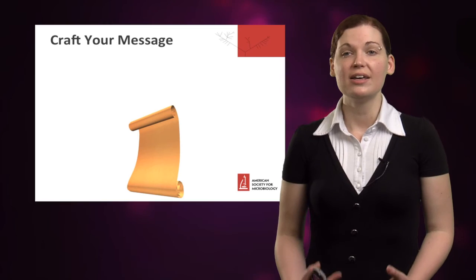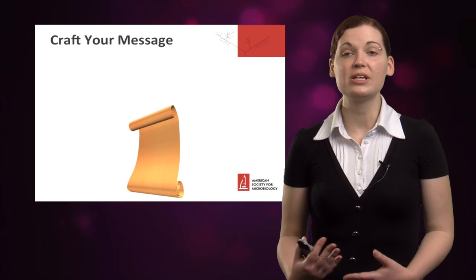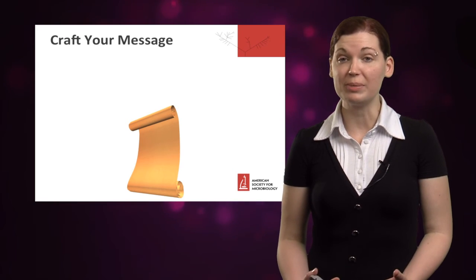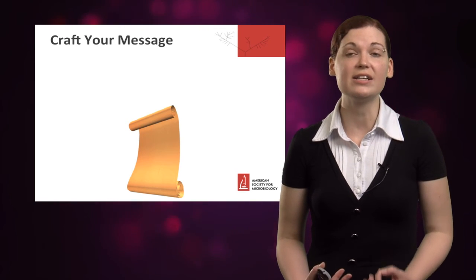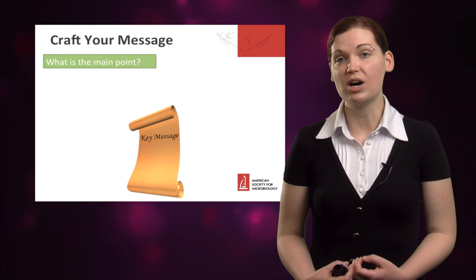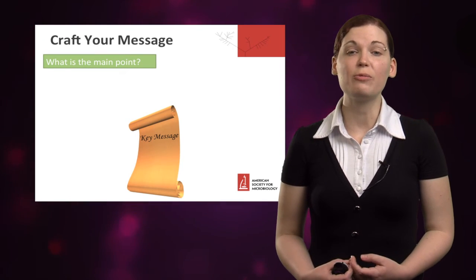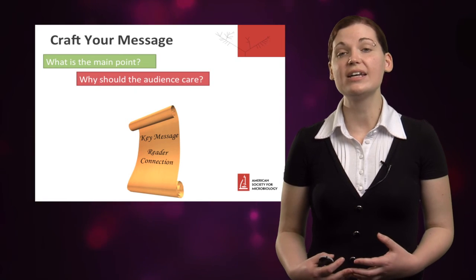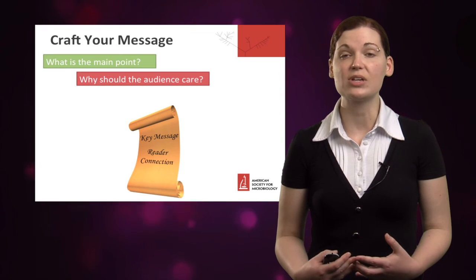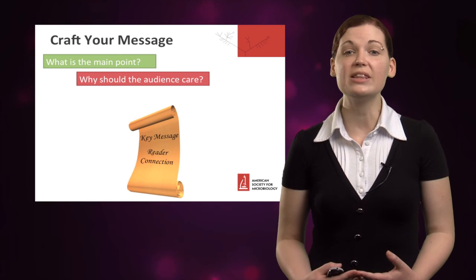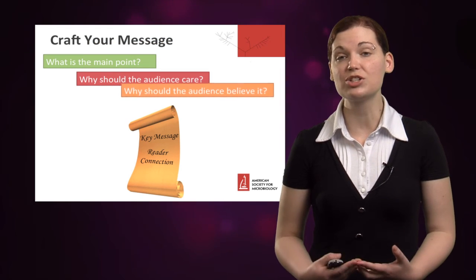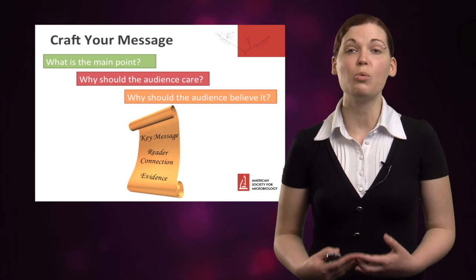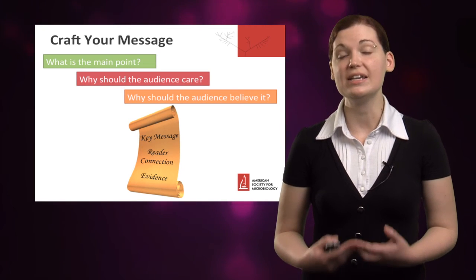Now that you've had a chance to identify your goals and think about the words that you're going to use, next it's time to think about putting them together to build your message. You want to take how you would normally lay out a science talk or a research paper and flip it. Start with a key finding or result — what is the main point that you want your audience to know? Follow that with why they should care, tying it into something that the audience values, thinking from their perspective. Following that is where you give them the foundational material or supporting evidence so that they know why what you're saying is true.